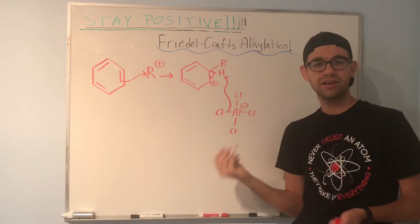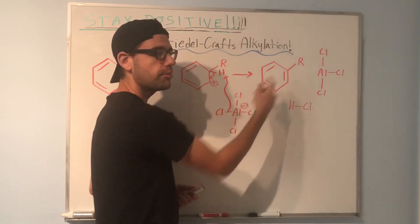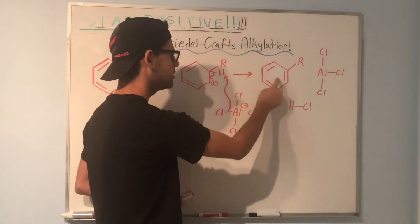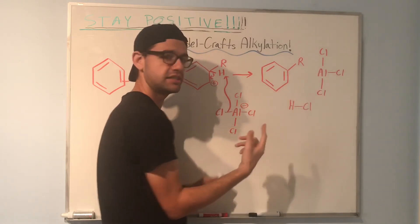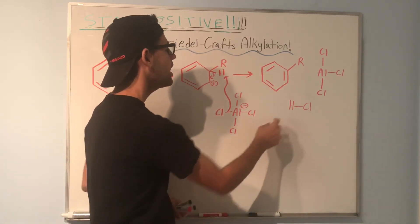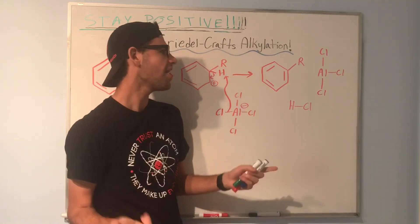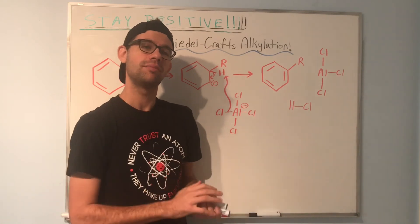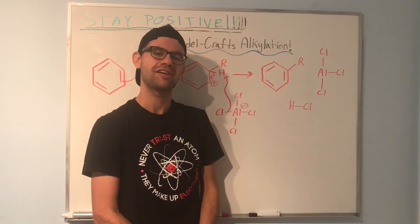So our products are going to look like this. We now have our R group — our alkyl group — on the benzene ring with aromaticity re-established. Note that we've also regenerated our catalyst AlCl₃, because catalysts get regenerated. And we've formed some HCl from this deprotonation step. So that's how we get an alkyl group onto a benzene ring using Friedel-Crafts alkylation. I hope that was helpful, and thanks for watching.